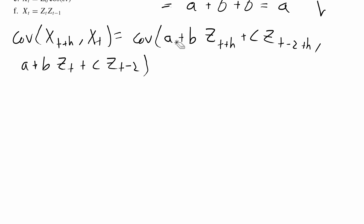Starting with the first part, a: the covariance between a constant and any other constant or random variable is zero. So comparing a to the first, second, and third parts all gives zero. For the second part of the first expression, the covariance between a random variable and a constant is also zero.